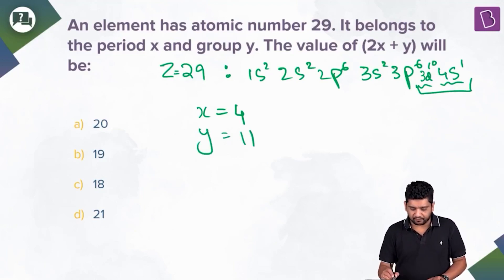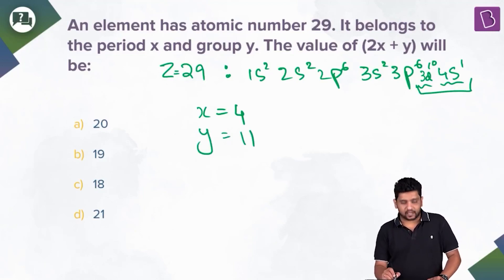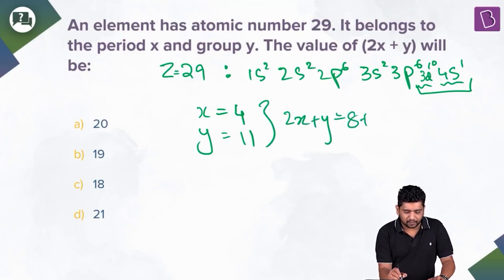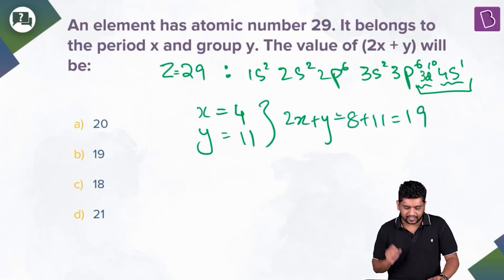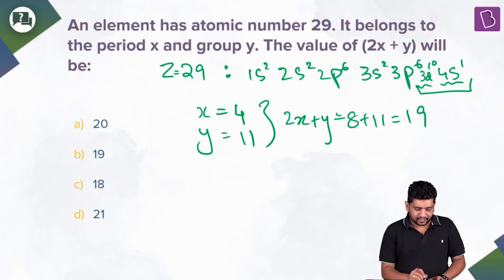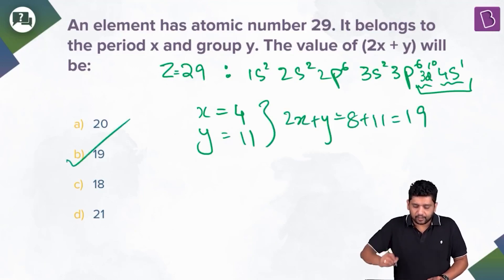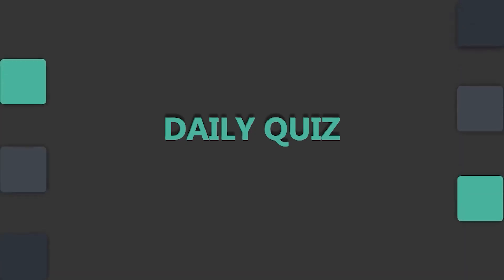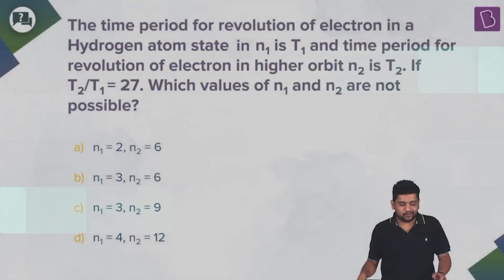So 2x + y = 2(4) + 11 = 8 + 11 = 19. That corresponds to option B.